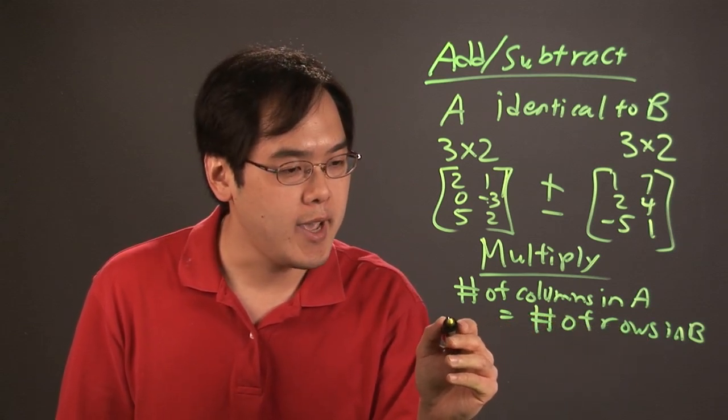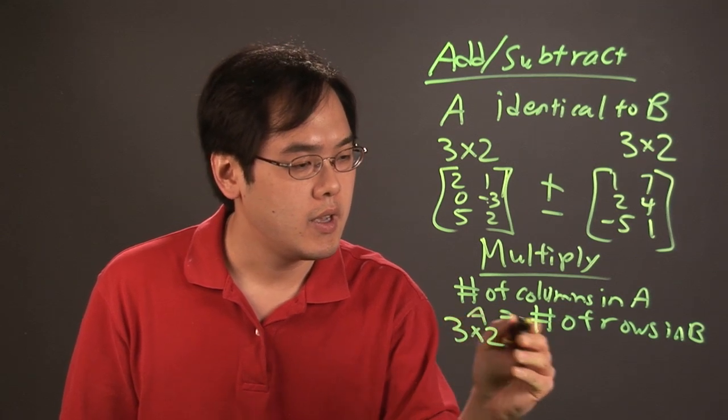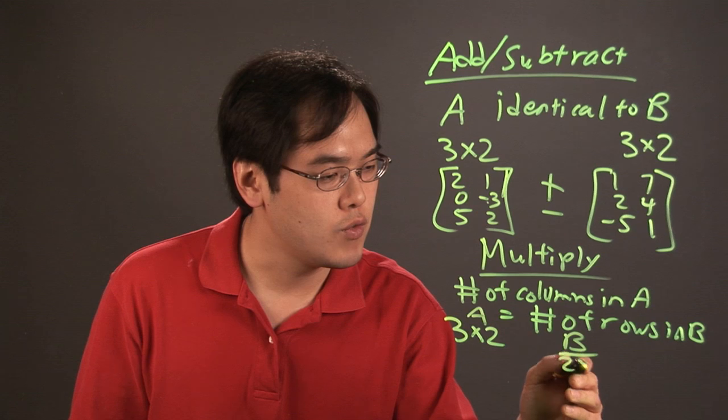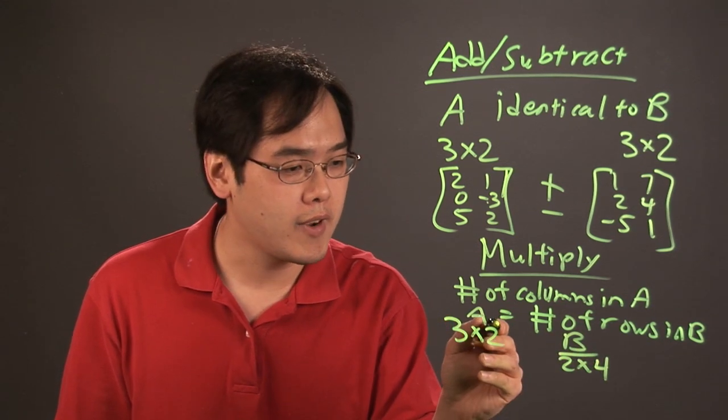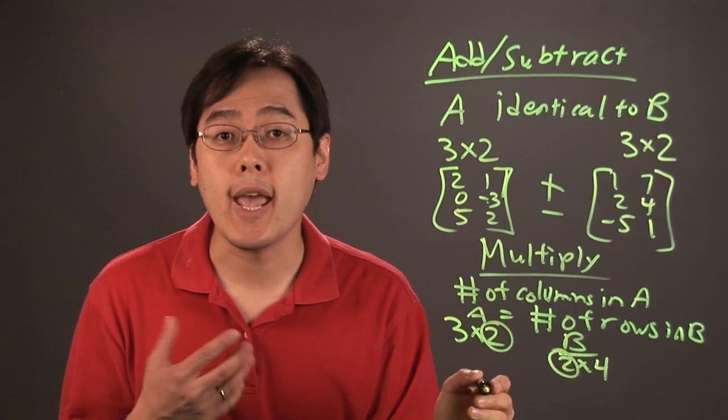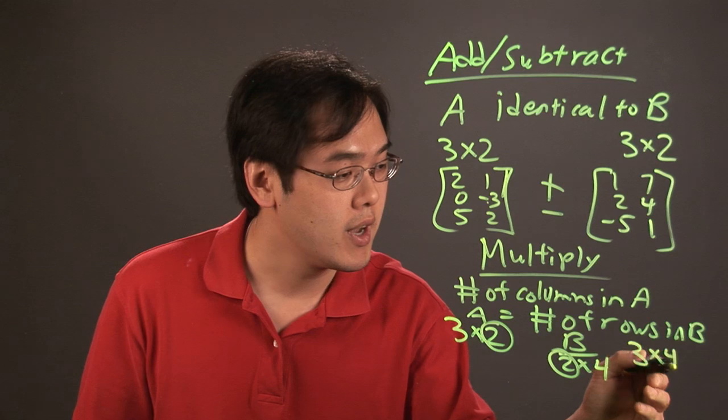For example, if you had A being 3 by 2 and B being 2 by 4, the number of columns in A and the number of rows in B match, and what you will have at the end is a 3 by 4 matrix.